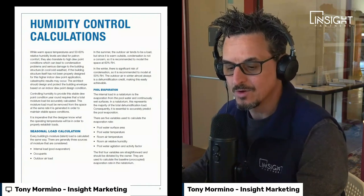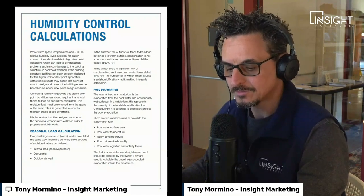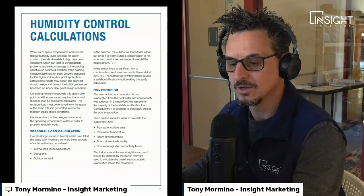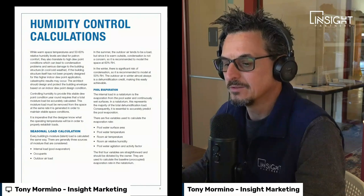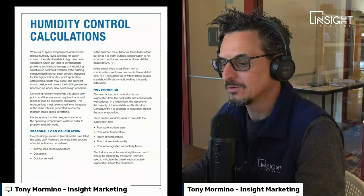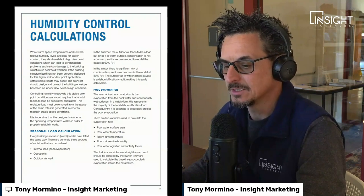It is imperative that the designer know what the operating temperatures will be in order to properly establish loads. There are generally three sources of moisture to consider: internal load (pool evaporation and occupants) and outdoor air load. In summer, the outdoor air tends to add moisture to the space, and since condensation is not a concern, it is recommended to model this space at 60% RH. In winter, there is significant risk of condensation, so it is recommended to model at 50% RH. The outdoor air in winter almost always provides a dehumidification credit, making this easily achievable.